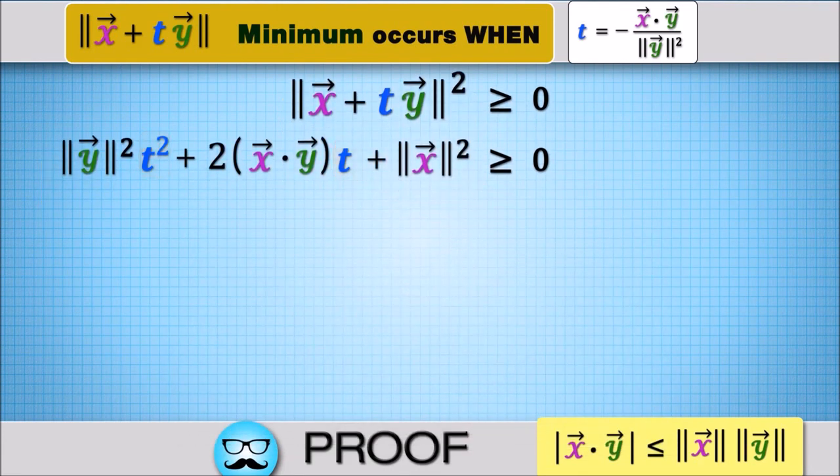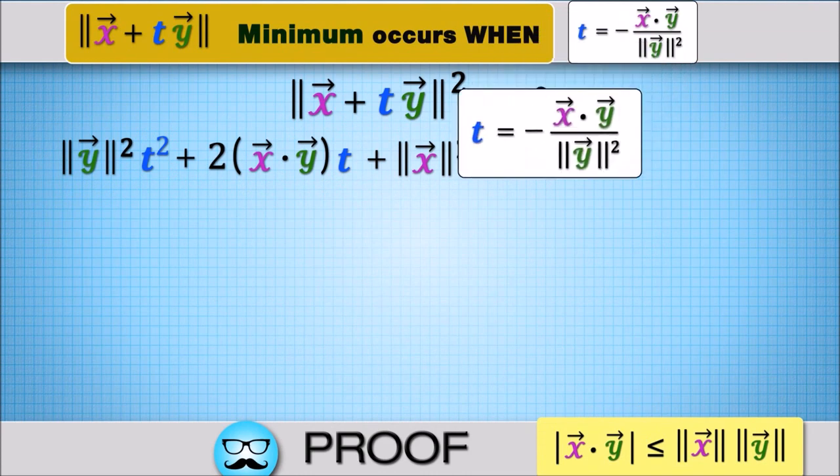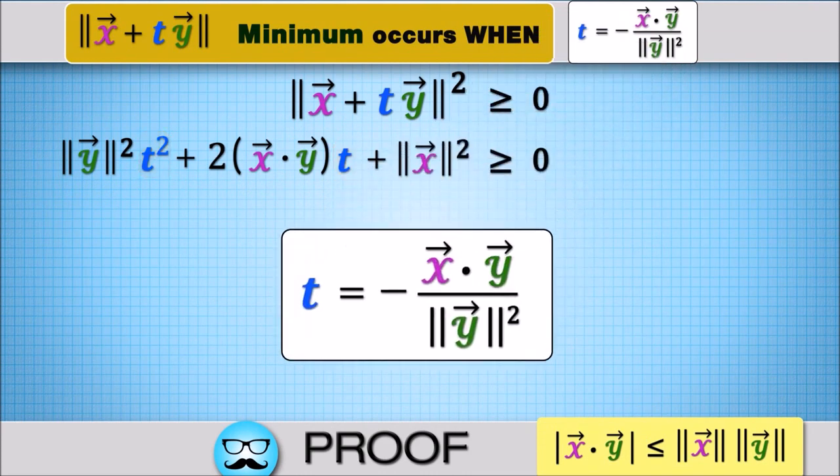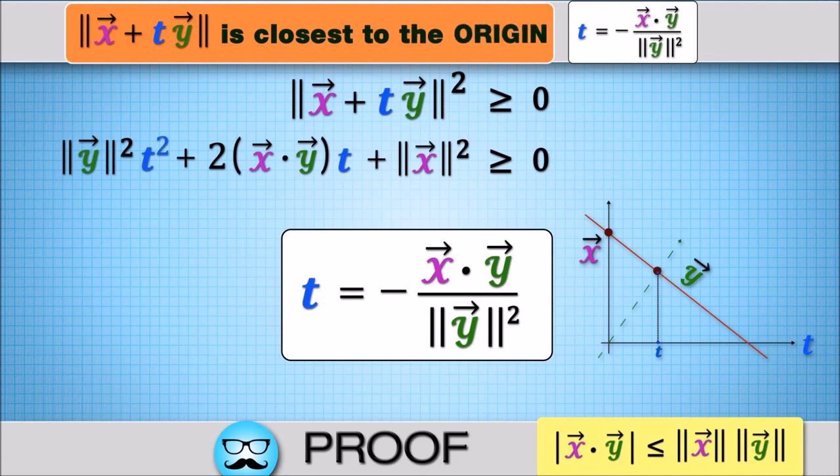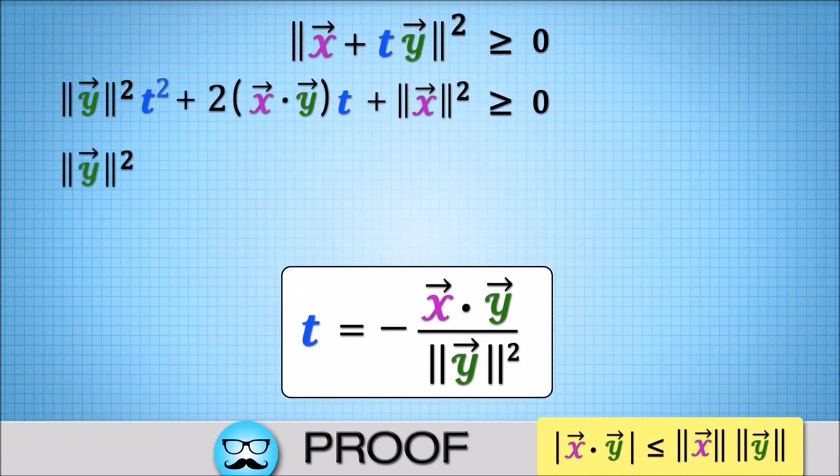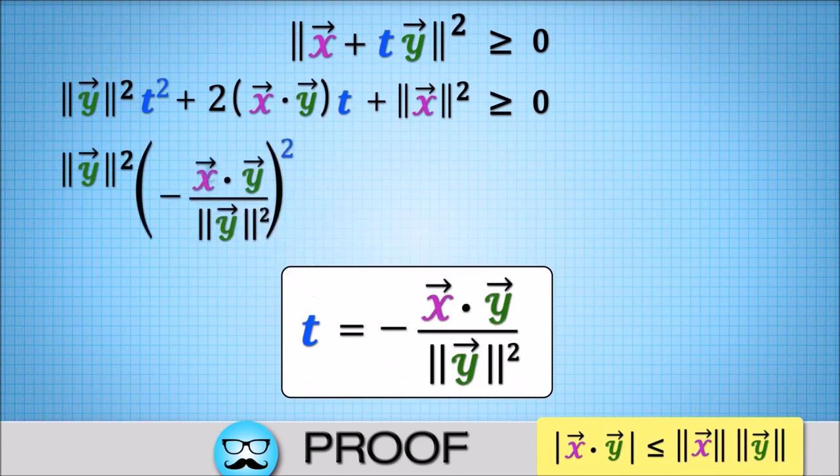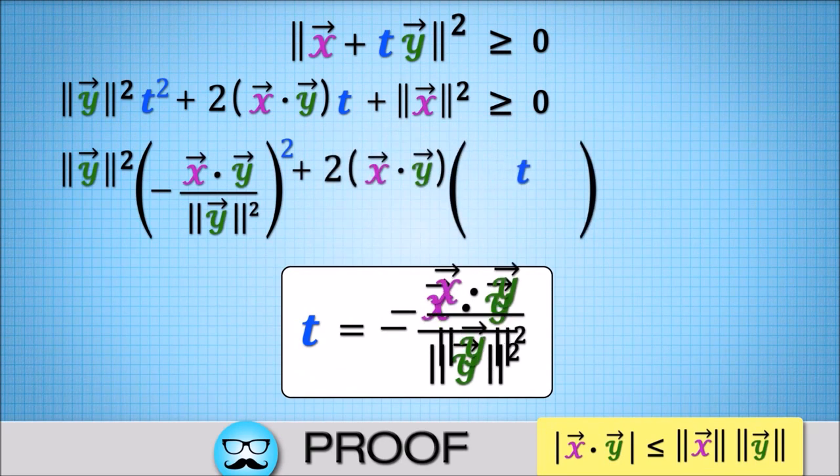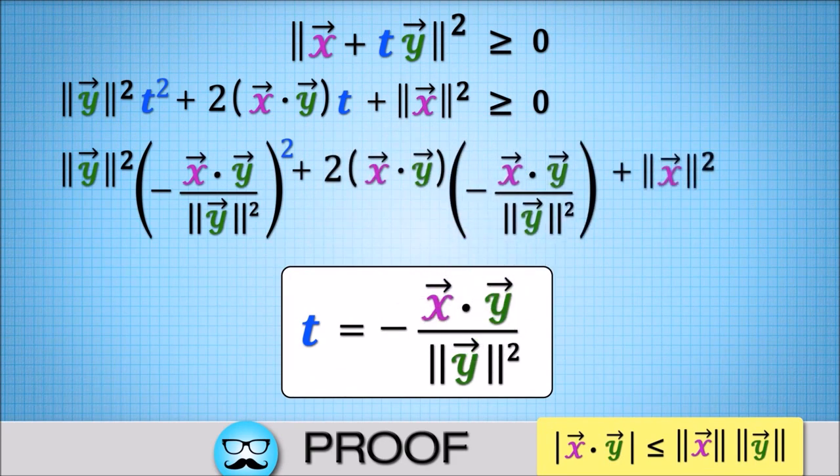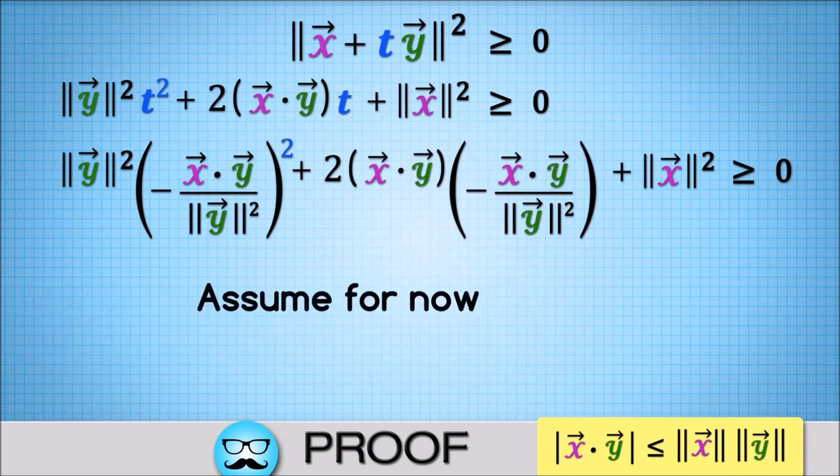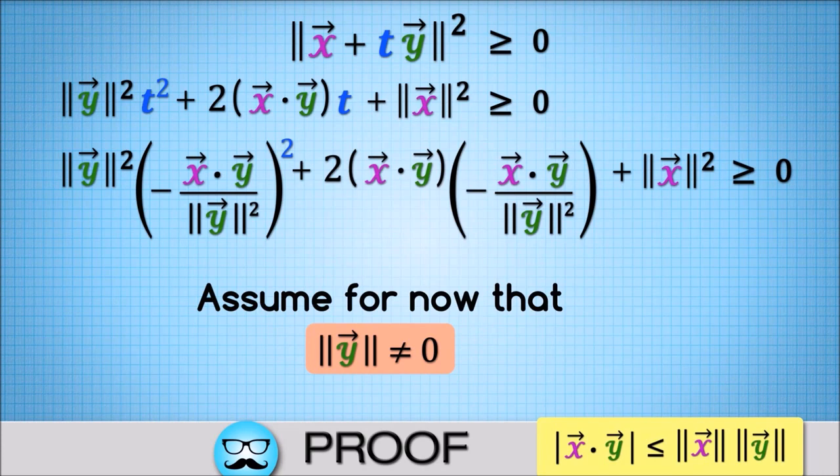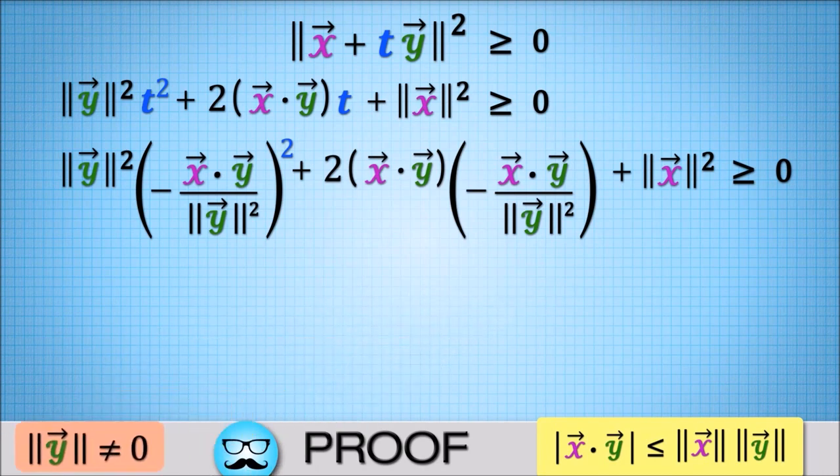This is true for all t, so plug in a particular t, namely the t where tx plus y is closest to the origin. Assume for now the norm of y is non-zero, and hence this fraction is defined.